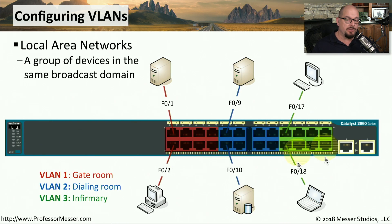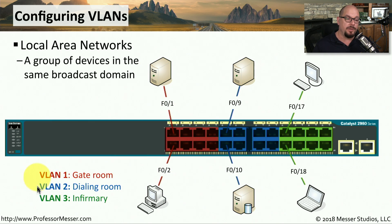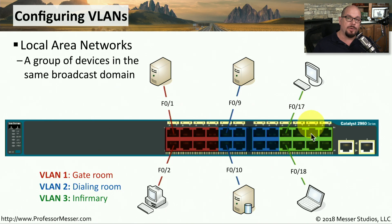For example, here's a single switch where three separate VLANs have been configured. We have the red VLAN, which is VLAN 1 — that's for the gate room. We have VLAN 2, the blue one that has the dialing room. And then the green VLAN is VLAN 3 for the infirmary. All of the devices connected to the red ports can communicate to each other on VLAN 1, the devices on the blue network can communicate to each other, and the devices on the green network can communicate to each other. None of the devices on these separate networks are able to communicate across that VLAN separation, which allows you to maintain security and efficiency while minimizing the number of switches you need.